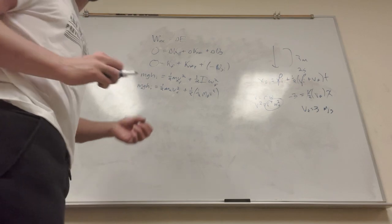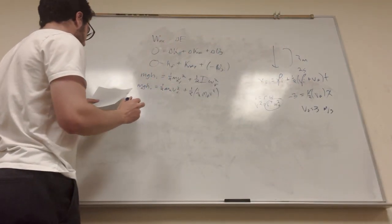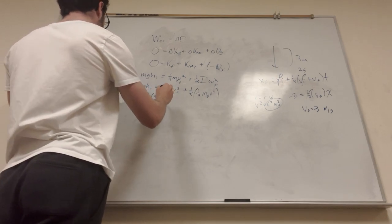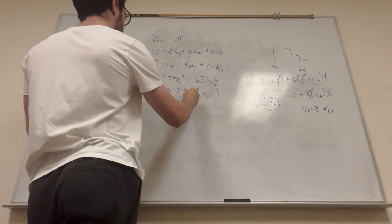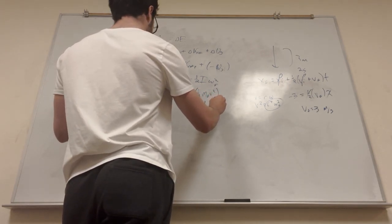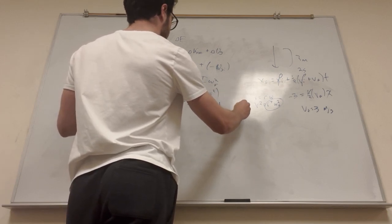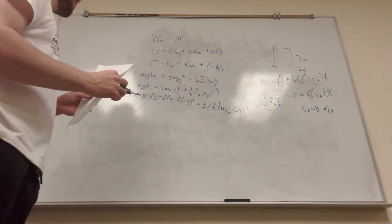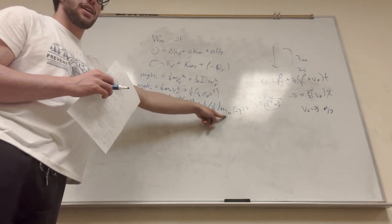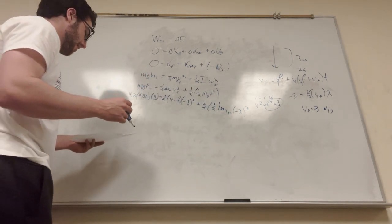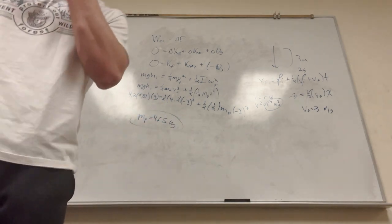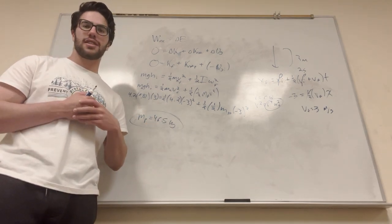Let's plug it all in. Mass of the block is 4.2 kg: 4.2 times 9.81 times height 3, equals one-half times 4.2 times (negative three) squared, plus one-half times one-half times mass of the pulley (what we're trying to find) times (negative three) squared — the negative squared becomes positive nine. You calculate the left side, subtract the translational KE term, then divide by everything else to isolate the pulley mass. The mass of the pulley ends up being 46.5 kilograms, which is a pretty reasonable number. That's how you solve these kinds of problems — good luck on your physics homework!